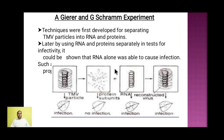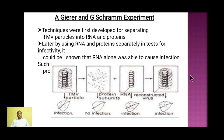Looking at the experiment in detail: the full TMV particle with its protein layer and single-stranded RNA was infected onto the tobacco plant and infection occurred. When the assembly was separated into proteins and RNA, proteins rubbed on the leaves caused no infection. But when RNA was rubbed on the leaves, infection occurred. When the particles were reconstructed into TMV and applied again, infection also occurred. However, they were not able to conclusively confirm it was RNA causing the infection.